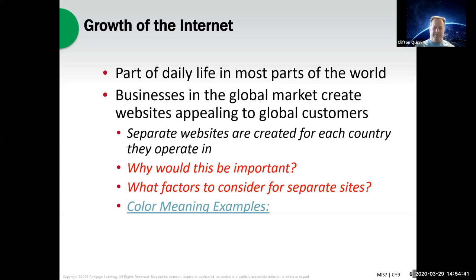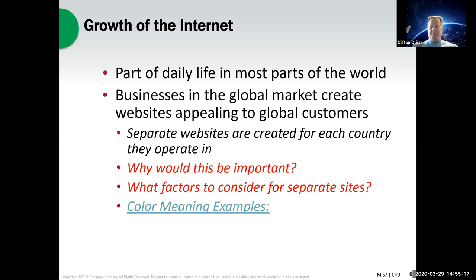Growth of the internet — it's part of daily life all around the world, though there are still some places that are digital deserts, like jungles, deserts, or remote islands. But now you've got a company that wants to build a website — say Home Depot or FedEx — and you want to make it appealing to global customers. Companies now have different websites depending on what country visitors are coming from. Obviously, languages matter — if you're in Mexico, Spain, or Colombia, you'd probably prefer to see your website in Spanish, or German or French for those regions.